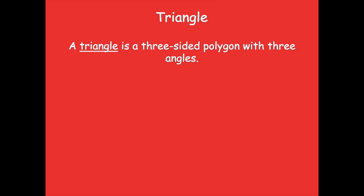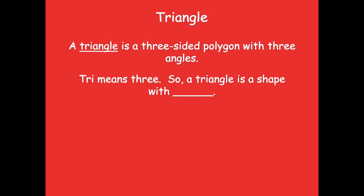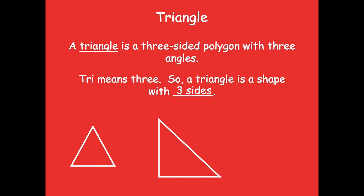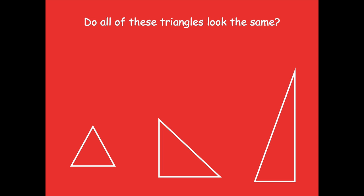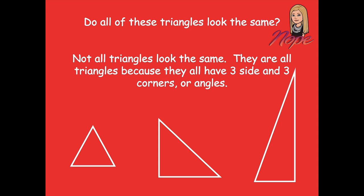A triangle is a three-sided polygon with three angles — that means it has three sides and three angles. Tri means three. So a triangle is a shape with three sides. This is probably the most common triangle you're thinking of, but we can also have triangles that look different. Not all triangles look the same — they're all triangles because they have three sides and three corners or angles.